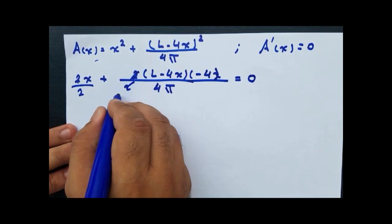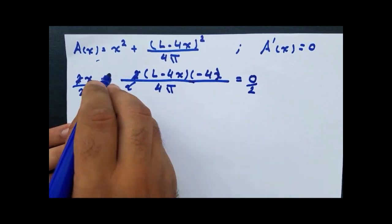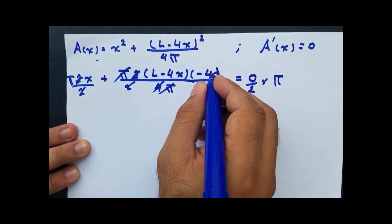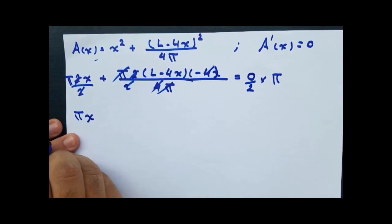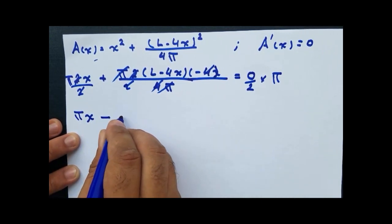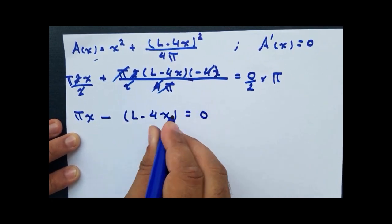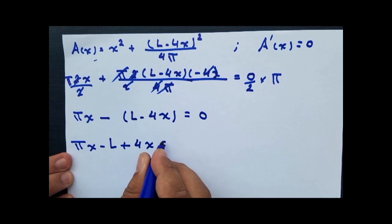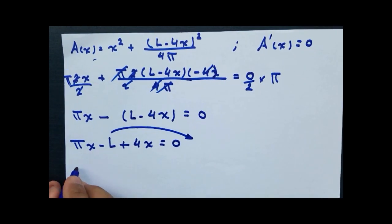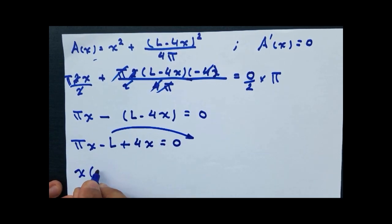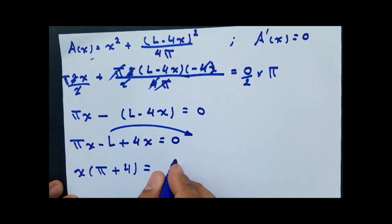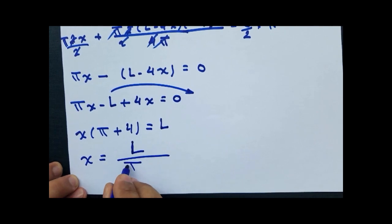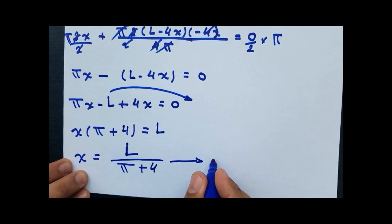We divide both sides by 2, and then multiply the whole equation by π. This simplifies so that 4 cancels with 4, leaving us with πx minus (L minus 4x) equals zero, which gives πx minus L plus 4x equals zero. Taking L to the other side and factoring x, we get x times (π plus 4) equals L, so x equals L over (π plus 4). This is equation number 2.